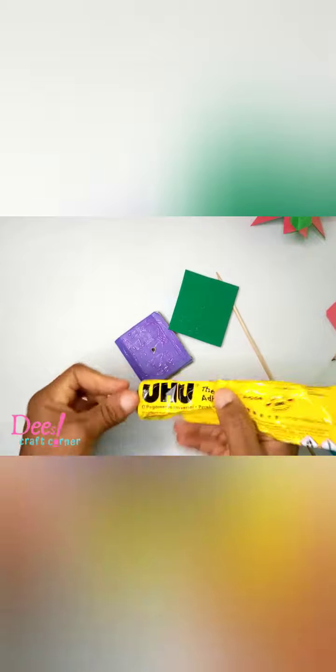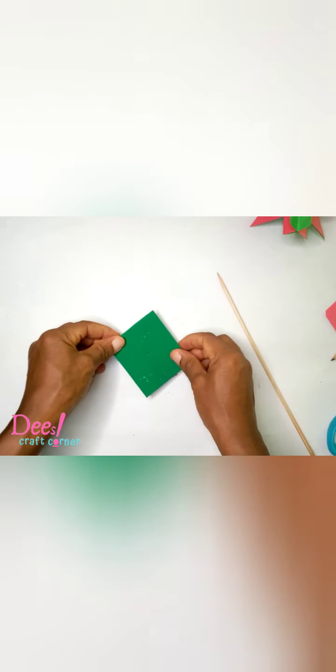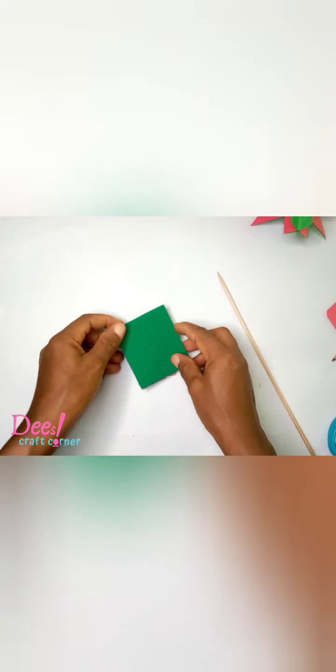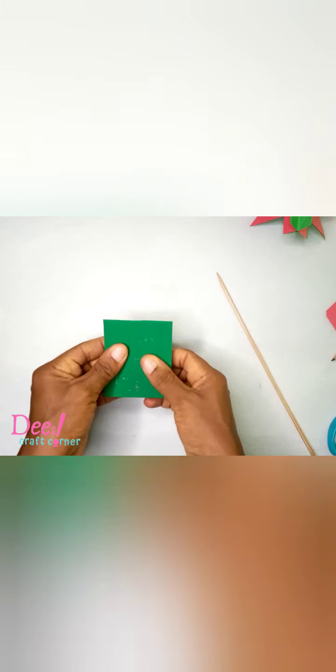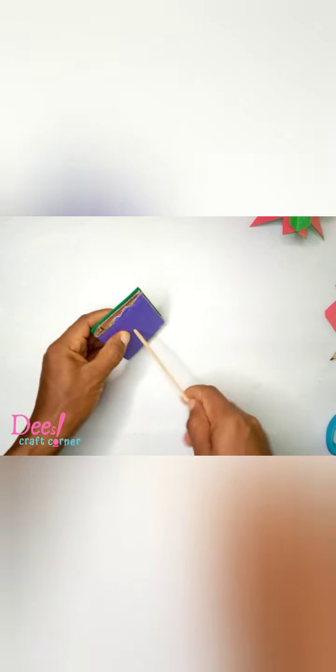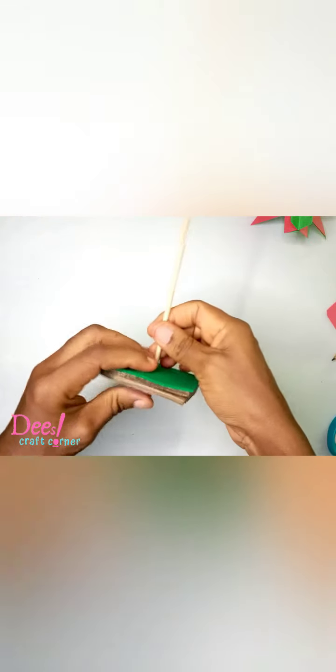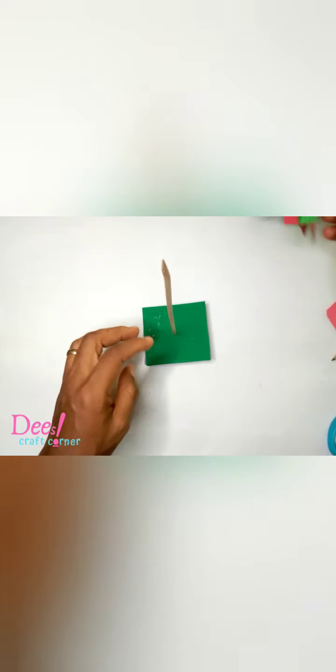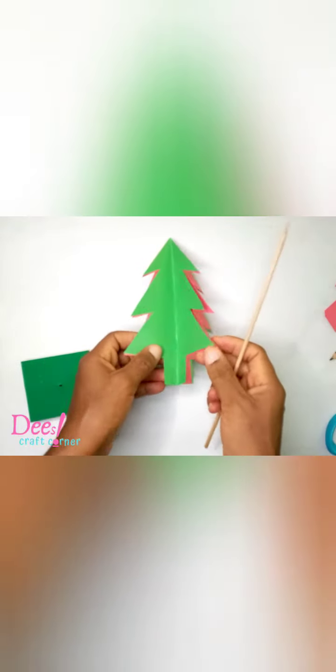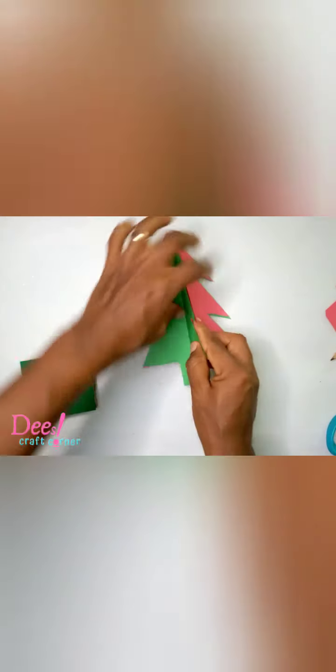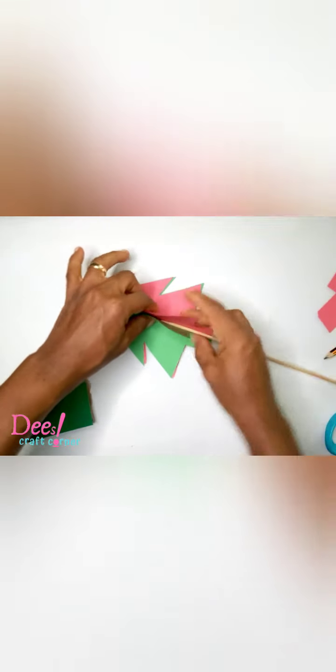Now we can glue this. It's basically just a stand so that our Christmas tree can stand. Well, it's fine. I made a mistake here but it's fine. So we have our stand. Now for the last bit, I'm just going to stick this in and close it so that it sits together.